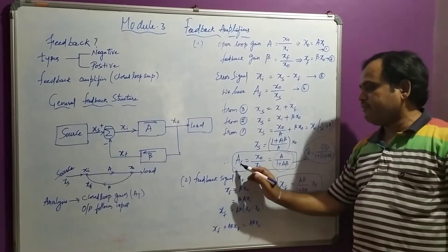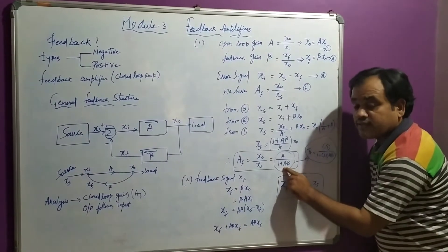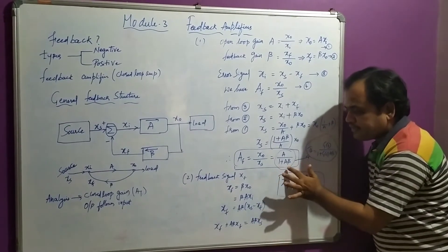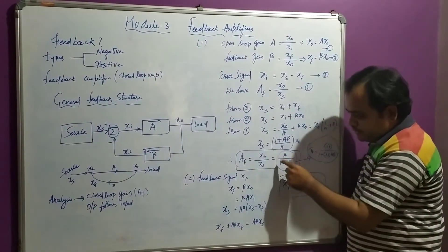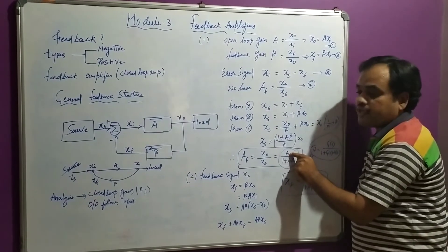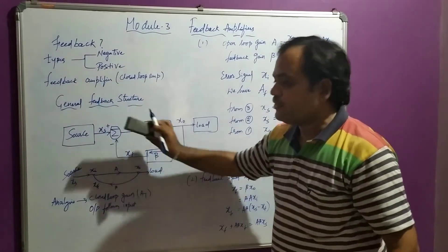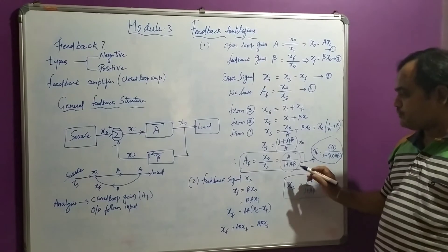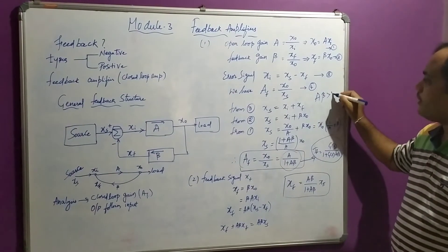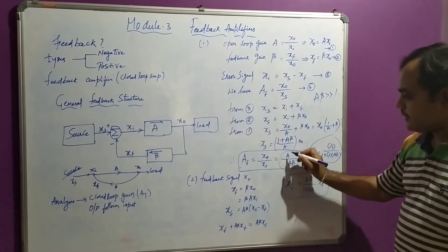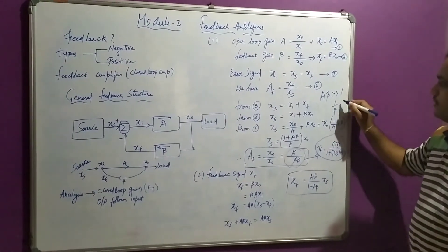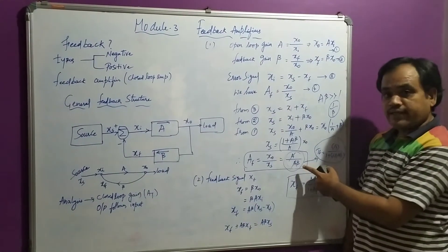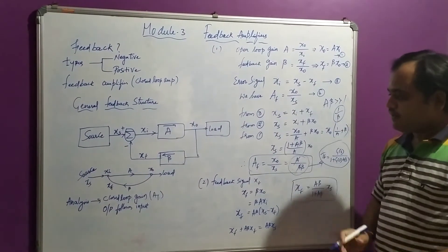The product A·beta is called the loop gain, and (1 plus A·beta) is called the amount of feedback. The closed loop gain is 1 divided by (1 plus A·beta) times smaller than the open loop gain A. Now, if A·beta is far greater than 1, we can neglect 1, and the closed loop gain becomes approximately 1 divided by beta. This means the closed loop gain is completely dependent on the feedback gain beta and is independent of the open loop gain. This is the advantage of connecting negative feedback — it reduces the gain.